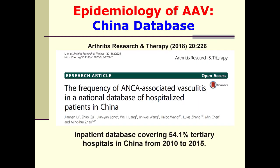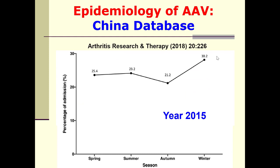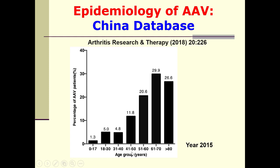Regarding epidemiology, data from China from an inpatient database covering 54% of tertiary hospitals over five years (2010–2015) included 43.7 million inpatients. ANCA-associated vasculitis was diagnosed in approximately 11,000 patients. This data shows that ANCA is more common in winter, and there is a predilection toward older age — above 60 years — with increasing frequency of ANCA-associated vasculitis.